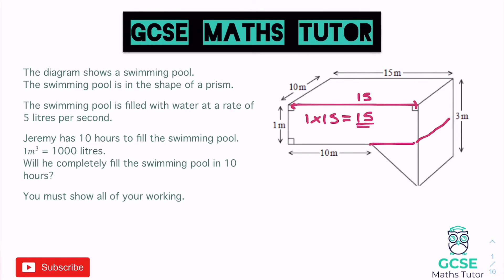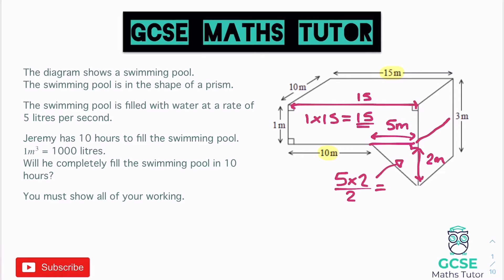We then need to look at the triangle. There's a right angle shown, so we need the base and height. From the bottom we have lengths of 10 and 15, so the difference gives us a base of 5 metres, and the height is 2 metres. Area of triangle = base times height divided by 2: 5 times 2 is 10, divided by 2 gives us an area of 5.